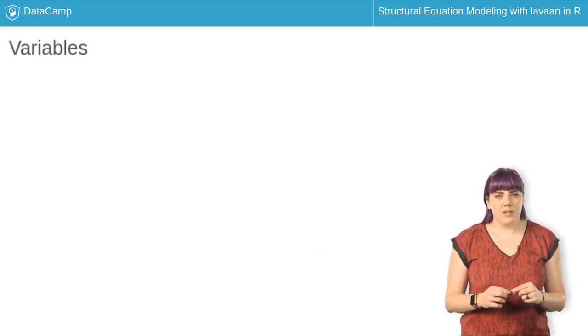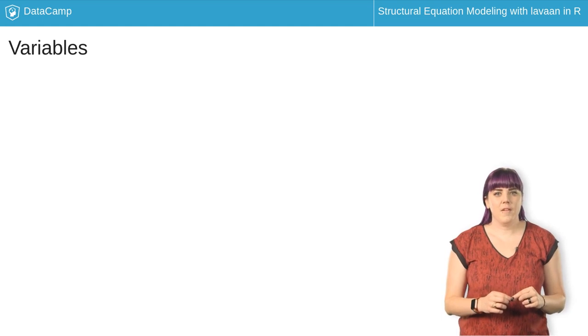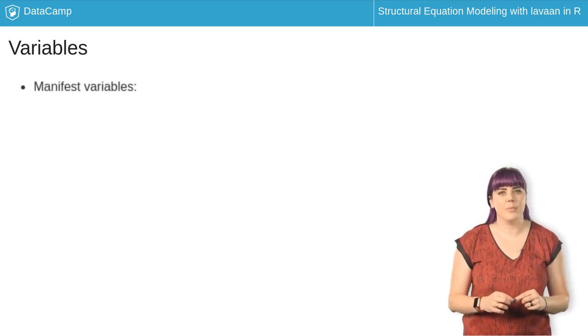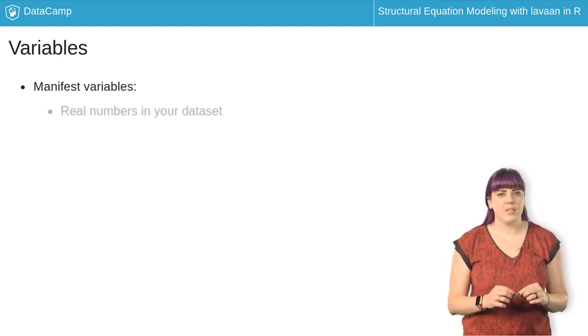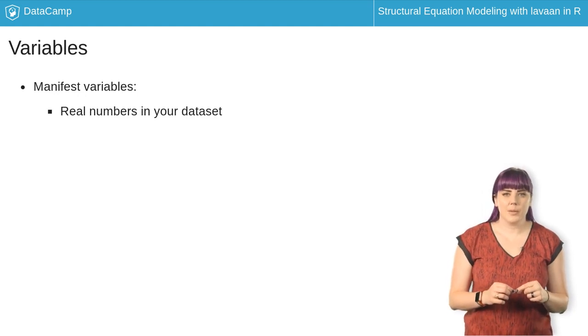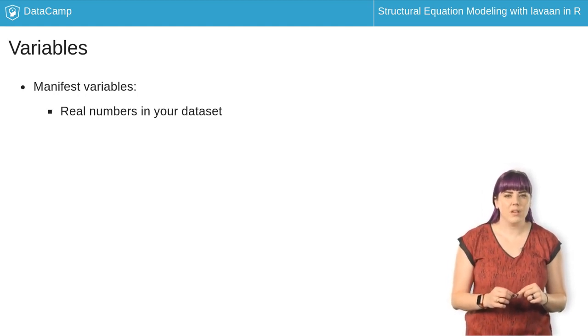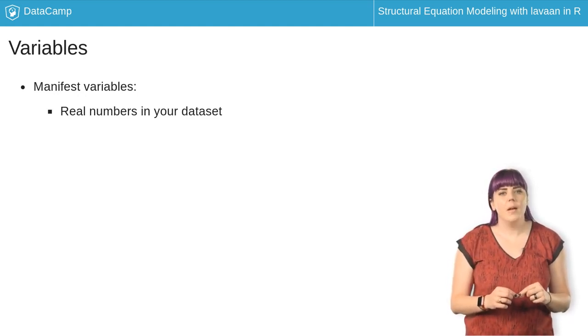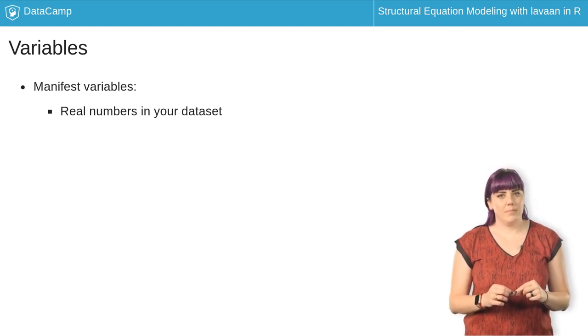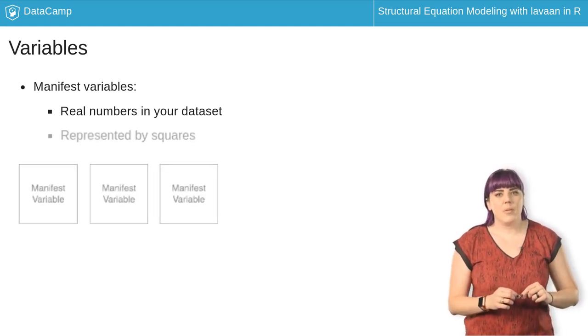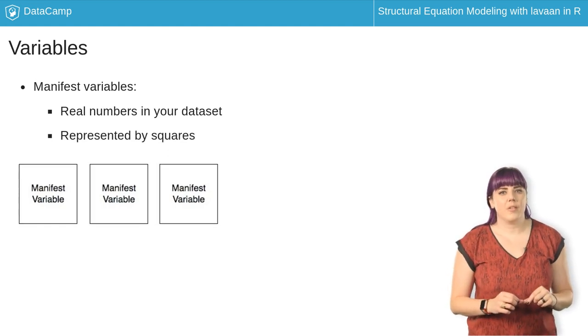In SEM models, there are two types of variables. First, there are manifest variables, which are direct measurements in your dataset. For example, you can directly measure the longest number of sequential digits a person can accurately remember, or digit span. Manifest variables are represented by squares on this diagram.